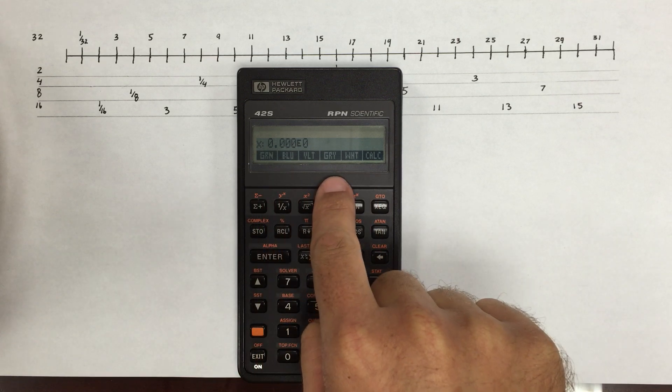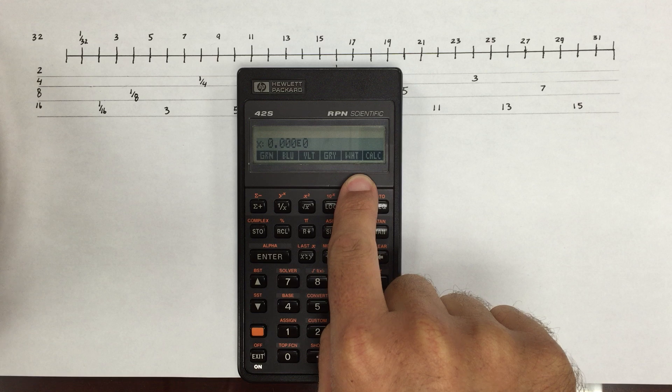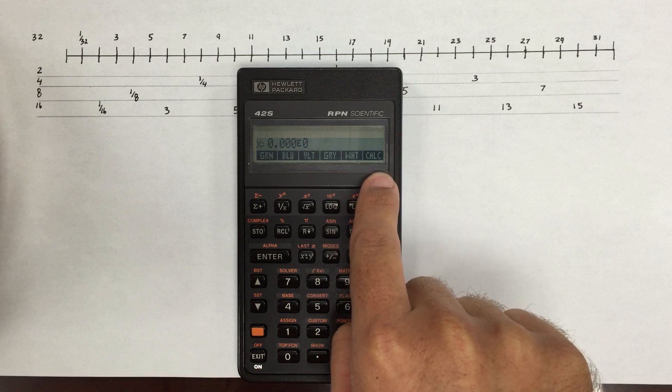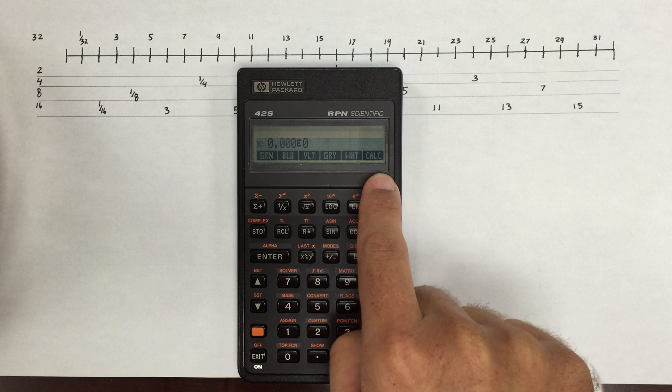I have green, blue, violet, gray, and white on this menu. The calc button is what will actually make the calculation based on the multiplier.